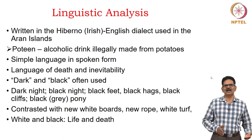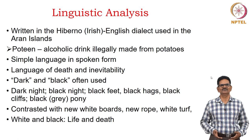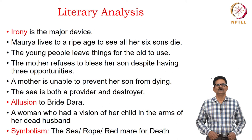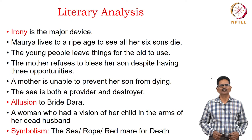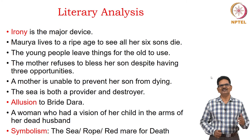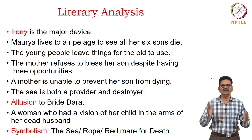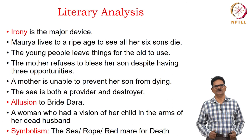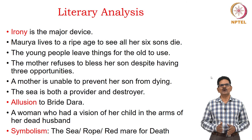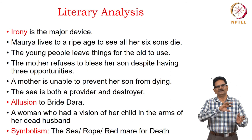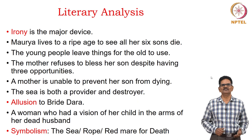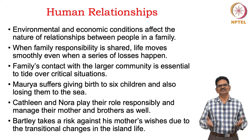We have a contrast between dark and white — whiteboards, new rope, white turf — where white and black probably represent life and death. Literary devices include irony, allusion and symbolism. Irony is a major device: Maurya lives to see all six sons die; the young die leaving things for the old; the mother refuses to bless her son despite three opportunities; the sea is both provider and destroyer. There is an allusion to Bride Dara, a woman who had a vision of her child in the arms of her dead husband, similar to Maurya's experience. Symbolism includes the sea, the rope, and the red mare for death.